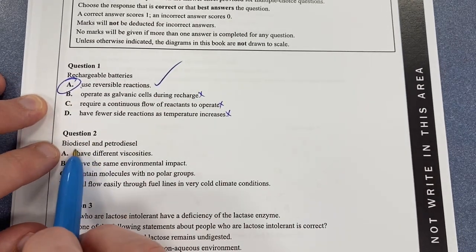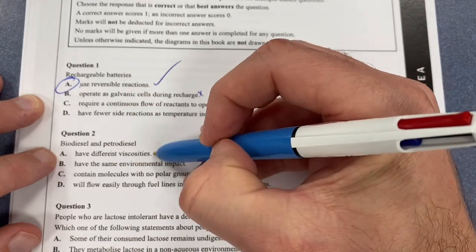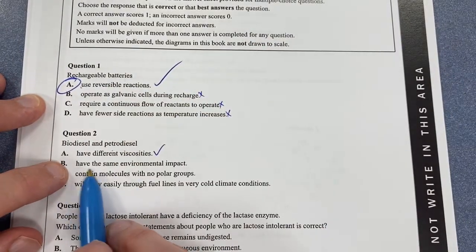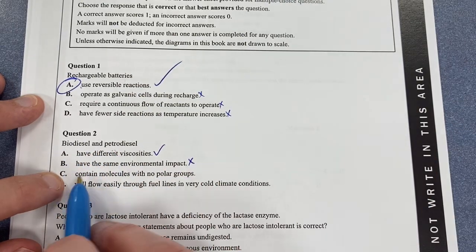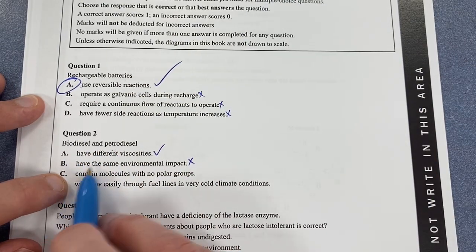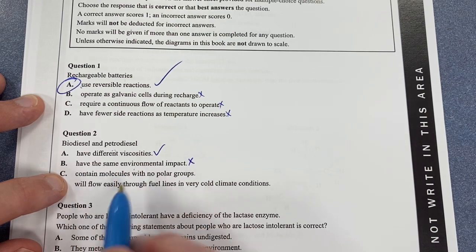Moving on to question two, biodiesel and petrodiesel have different viscosities. That's true. Have the same environmental impact - that's not true. Petrodiesel is far worse. Actually, well, it depends on how you're using it, but they have different environmental impacts.